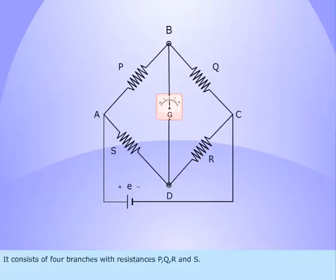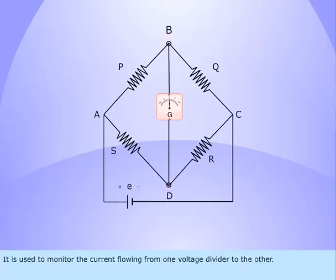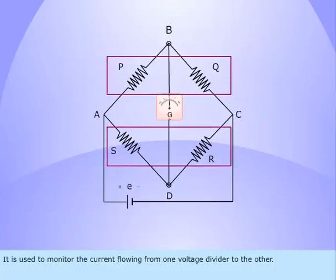It consists of four branches with resistances P, Q, R and S. A galvanometer is connected between the terminals B and D. It is used to monitor the current flowing from one voltage divider to the other.